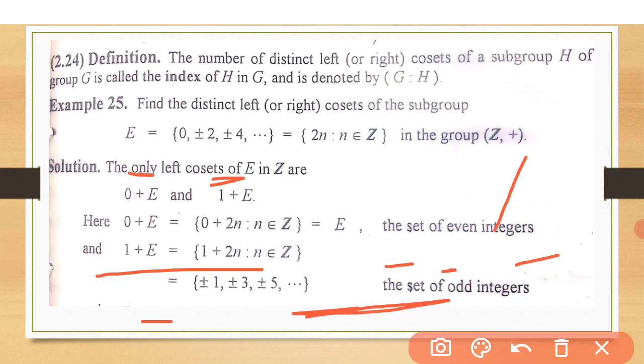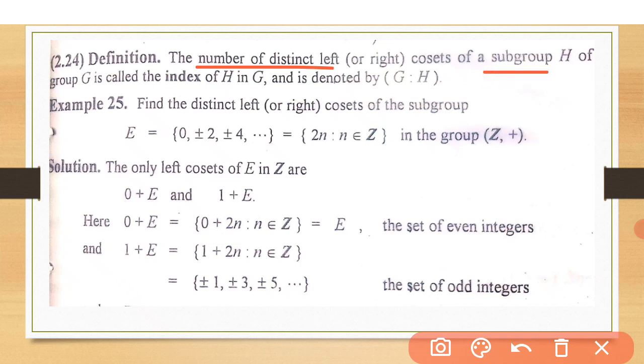Let us take the definition of index. The number of distinct left cosets - distinct means that there is no repetition, which have different elements - left or right coset of subgroup H of G is called the index of H in G.